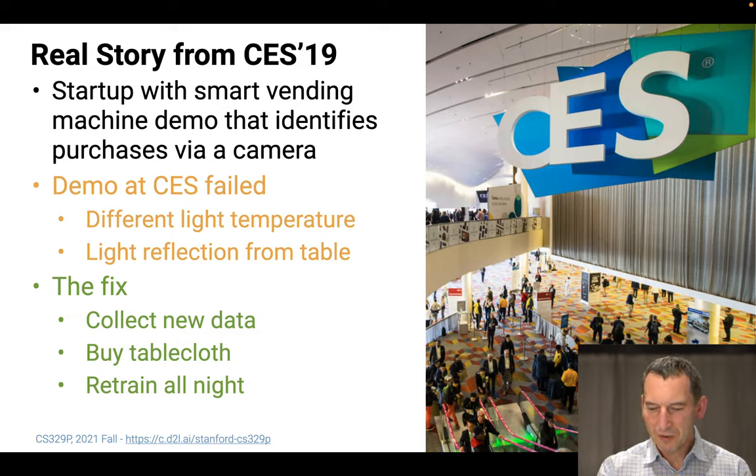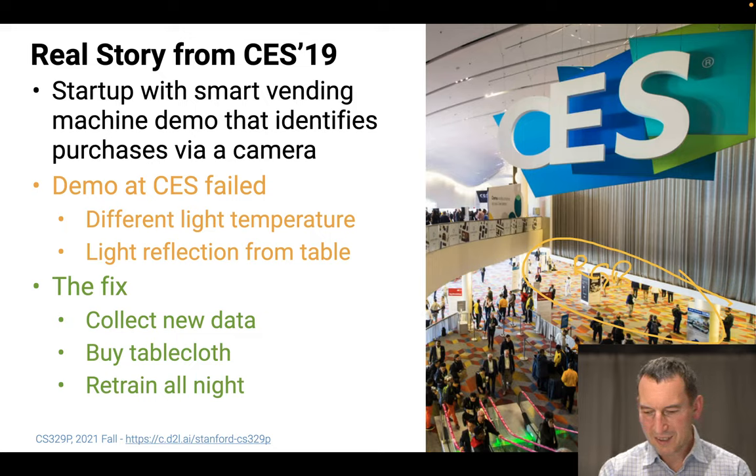And the different lighting temperature and light reflection from the table really messed it up. So if you look at this region here, for instance, underneath, there are actually some lights that are RGB lights. And you can see here, there's some other lighting happening. And basically, this is Las Vegas, right. And they like to spice things up and make it nice and flashy and colourful. And unfortunately, flashy and colourful in all sorts of different colours messes up your object recognizer. If you have a really shiny table, then that reflective surface messes it up entirely. So what they did is, they basically went off to collect new data, they went to get some tablecloth to kill the reflections, and then they retrained the system all night and hoped for the best. And it actually worked out okay. So their demo worked.